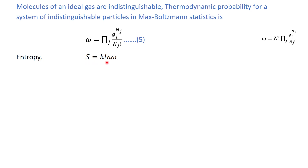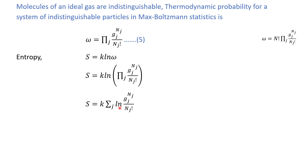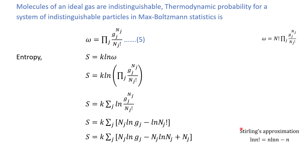We know that entropy is given by S equals k times log Ω, and Ω is given by equation number five. Taking the log of this expression, the product converts into a summation. Applying log to the ratio and then applying the Stirling approximation — log of N factorial equals N·log N minus N — we arrive at this equation.